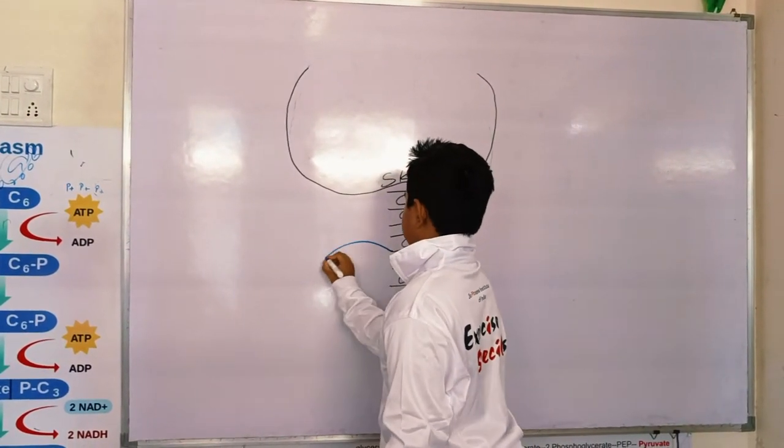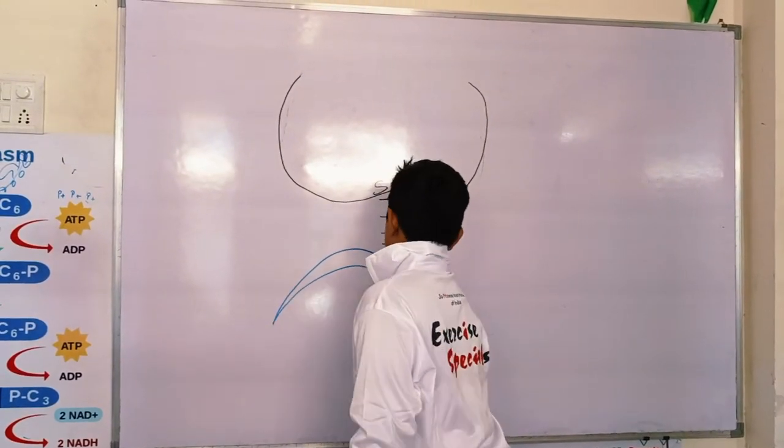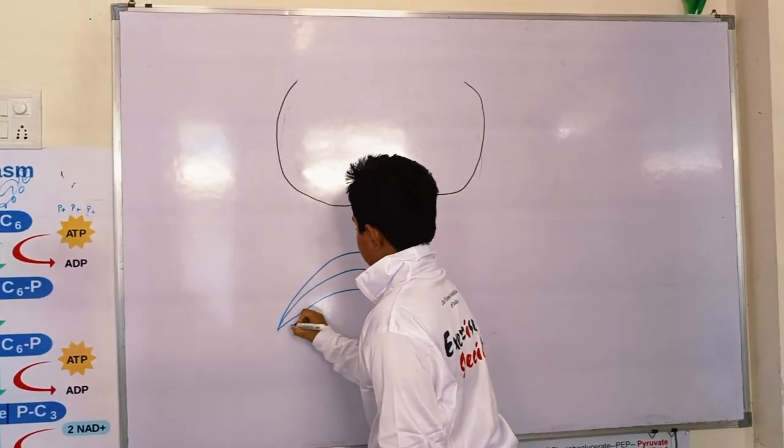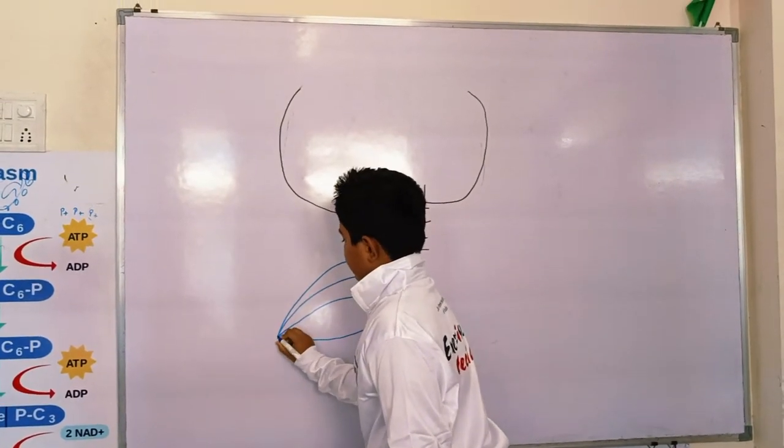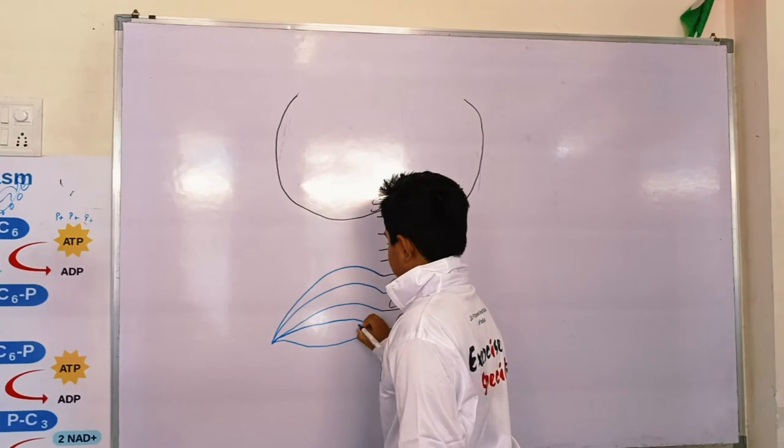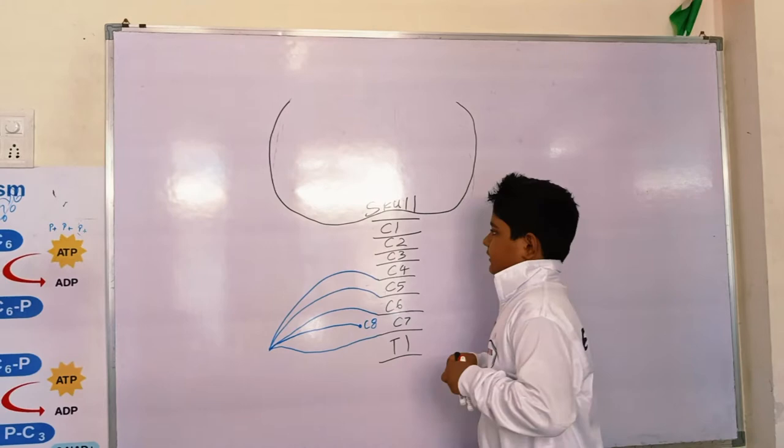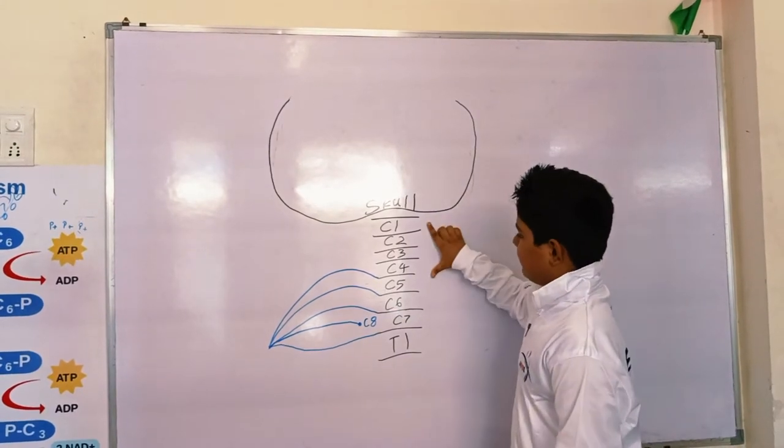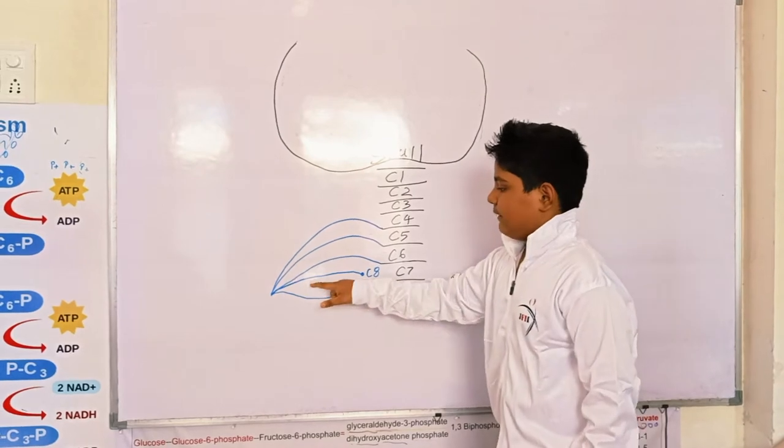From C5 a nerve comes, and from C6, C7, and C8. And here a nerve called C8 also comes. Students, there are only 7 cervical vertebrae, not 8. This C8 is the name of a nerve.